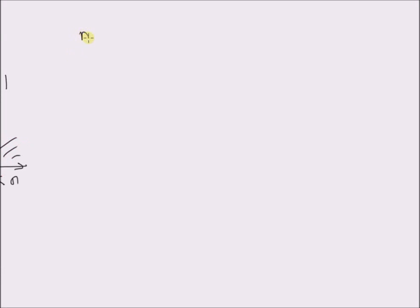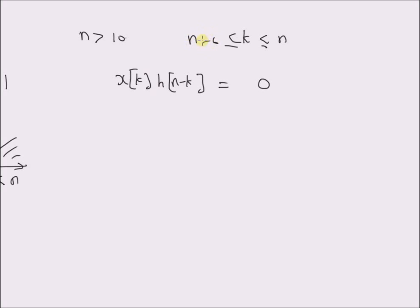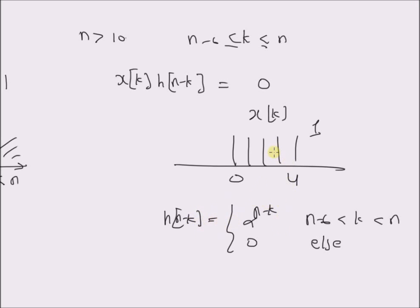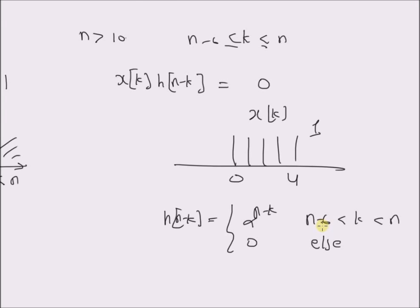For the final interval, n greater than 10, since values of k for h[n-k] must be between n-6 and n, and n is always greater than 10, the lower limit is always greater than 4. Therefore the overlap between x[k], which is non-zero only for k between 0 and 4, and h[n-k] is clearly equal to 0 for n greater than 10. The output y[n] is therefore 0 for n greater than 10.